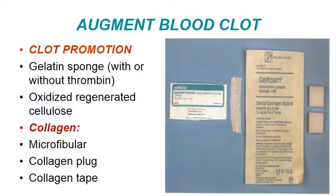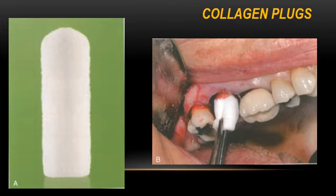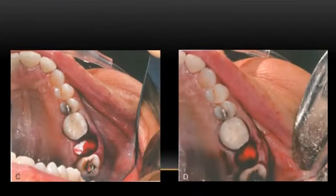Local clot augmentation methods should be used to prevent bleeding. Gelatin sponge — known as Gelfoam — can be impregnated with thrombin and placed inside the socket; it acts as a scaffold attracting blood cells and allowing platelet aggregation to start the coagulation cascade. Other options include Surgicel (oxidized regenerated cellulose), collagen in microfibrillar form, collagen plug, or collagen tape — all of which can be impregnated with thrombin. The collagen plug is inserted into the socket and secured with figure-of-eight sutures.